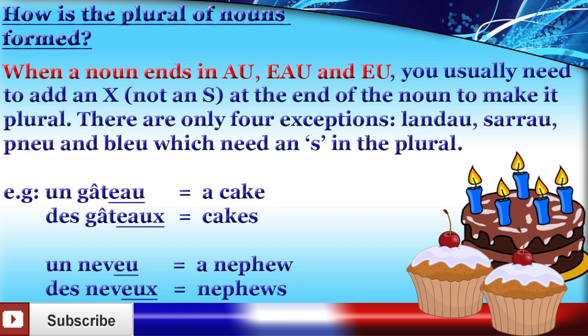When a noun ends in AU, EAU, or EU, you usually need to add an X at the end of the noun to make it plural. There are only four exceptions: landau, sarrau, pneu, and bleu, which need an S in the plural.